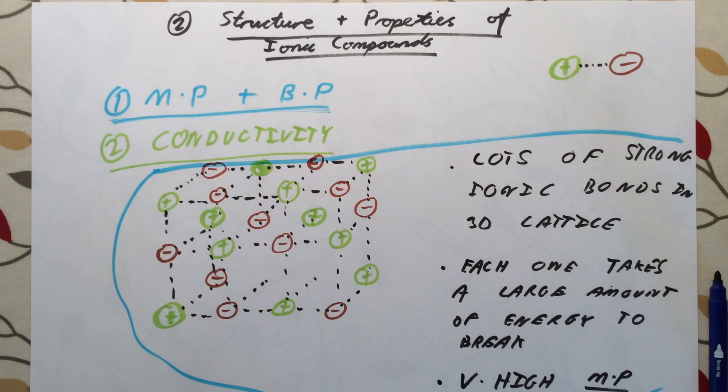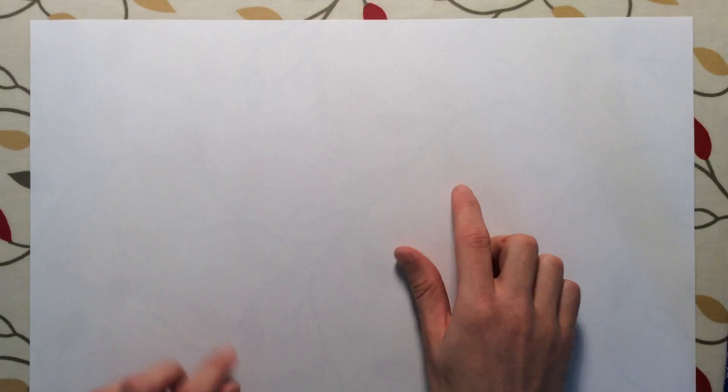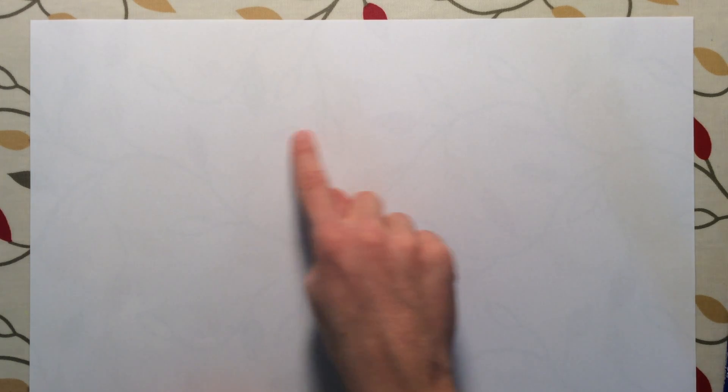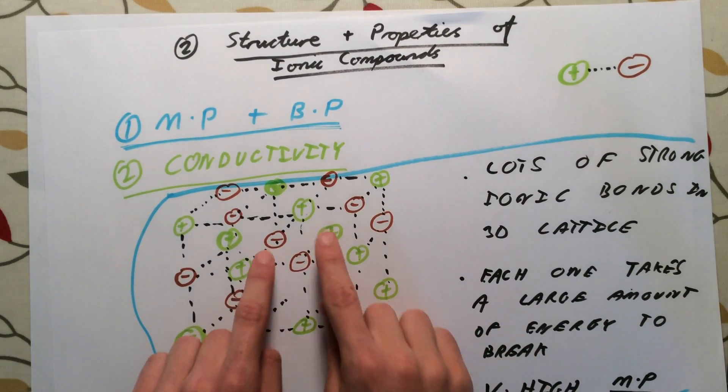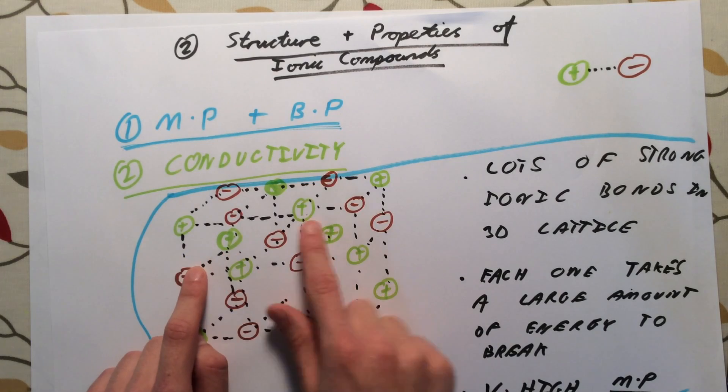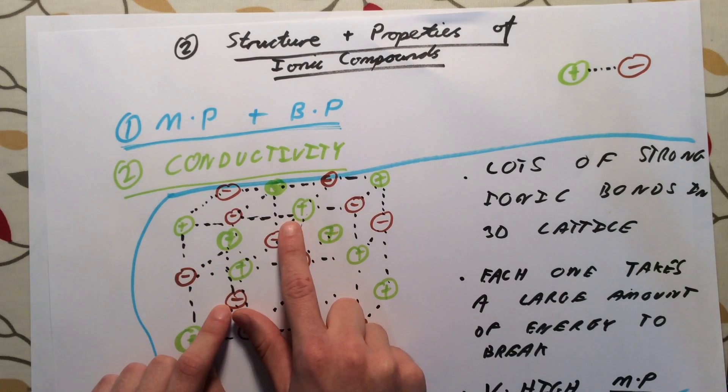When it comes to conductivity, it's very closely related. For anything to conduct electricity, we need to have charges that are able to flow. In an electrical wire, we have electrons or negative charges that are able to flow along the wire as a current, which will allow the wire to conduct electricity. In an ionic compound, when the ionic compound is solid, all of the ions are fixed in place by these strong electrostatic forces. They cannot move when the ionic compound is solid.